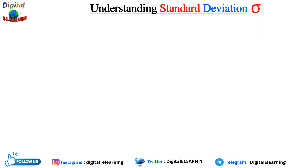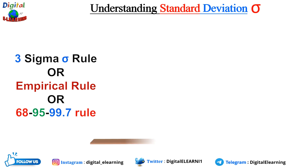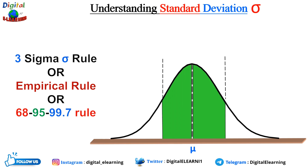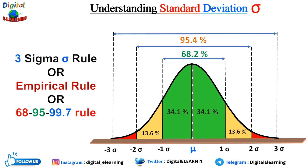Now, let's see how standard deviation is used in the normal distribution empirical rule, also known as the 68-95-99 rule. It states that almost all observed data fall within three standard deviations of the mean (mu and sigma). Specifically, 68.2% of the population will fall within plus or minus one standard deviation, 95.4% within plus or minus two standard deviations, and 99.7% within three standard deviations. That is the empirical rule or the three-sigma rule.